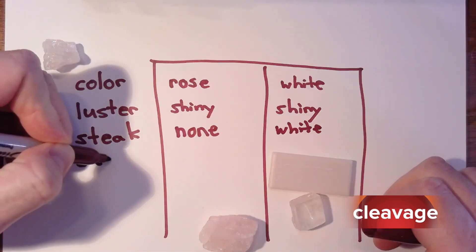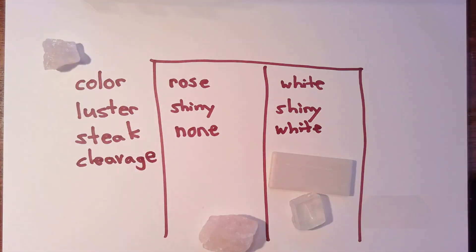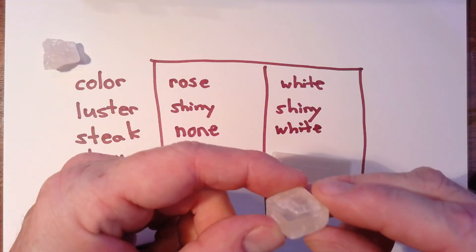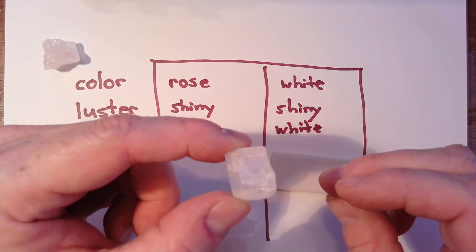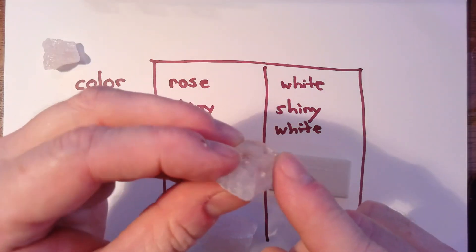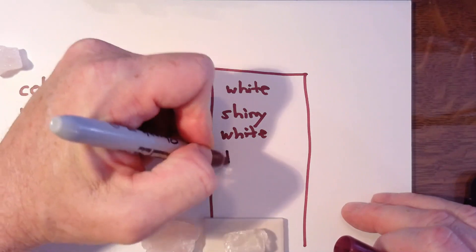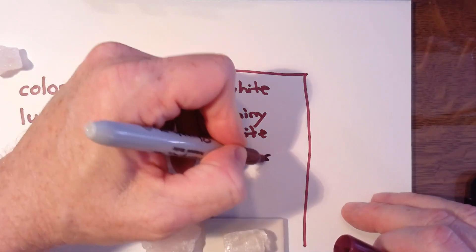Next I'm going to look at a property called cleavage — how the mineral will break apart, whether it breaks apart smooth. Right away I can see on the shiny white mineral that when it breaks apart, it breaks along these lines, and you can see that's a nice straight, even line. This mineral forms the shape of a prism. It has a really clean cleavage — we'll call that a clean, straight cleavage.